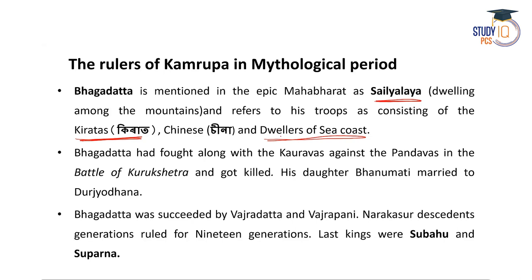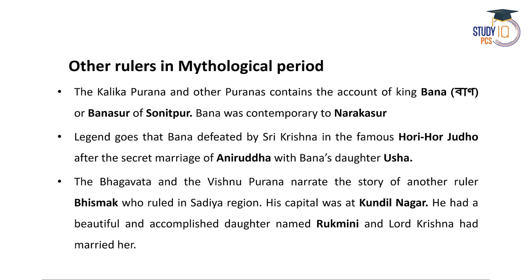Bhagadatta was killed in the Battle of Kurukshetra. His daughter Bhanumati was married to Duryodhana, one of the prominent Kauravas. Bhagadatta was succeeded by Vajradatta and Vajrapani. The descendants of Narakasura — Bhagadatta, Vajrapani, and Vajradatta — ruled for 19 generations. The last kings of this generation were Supratisthita and Suparna.